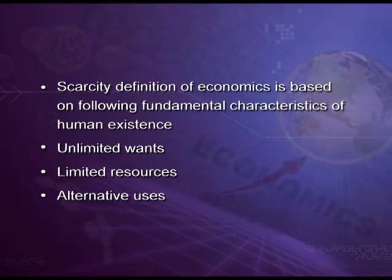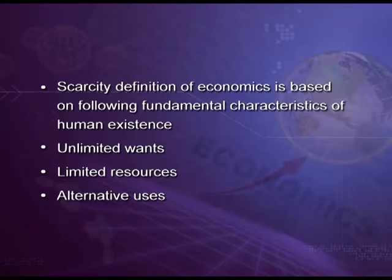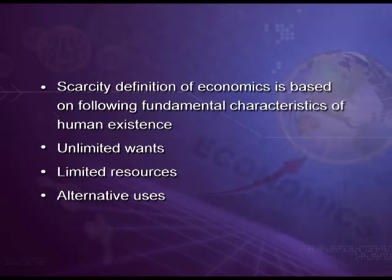The second point is limited resources. The means to satisfy these wants are limited. For example, if you get pocket money of 500 rupees per month, those 500 rupees are limited and you must satisfy your unlimited wants with them. The third point is alternative uses — those 500 rupees can be spent on books, a gift, or giving a party. These three are the root cause of economic problems.